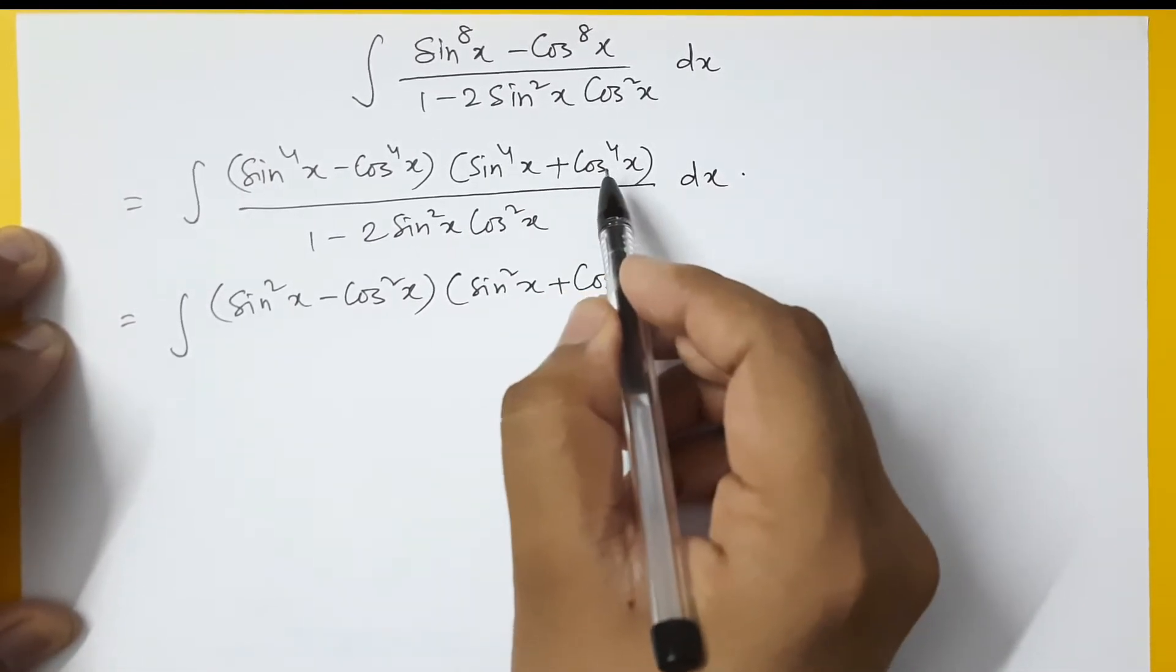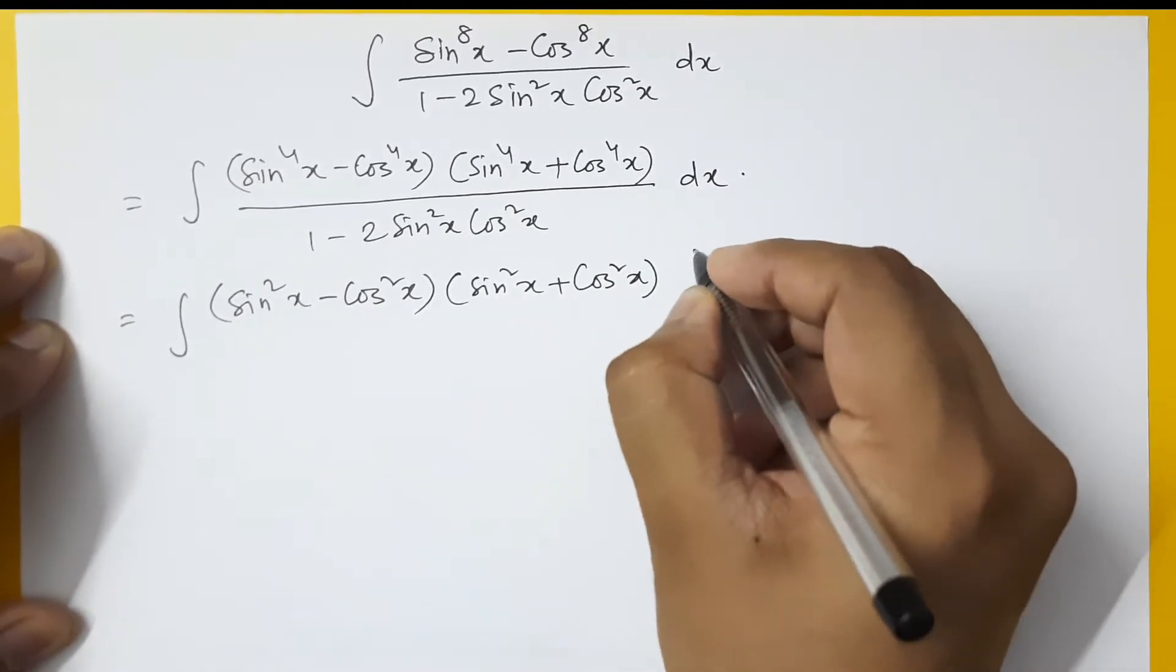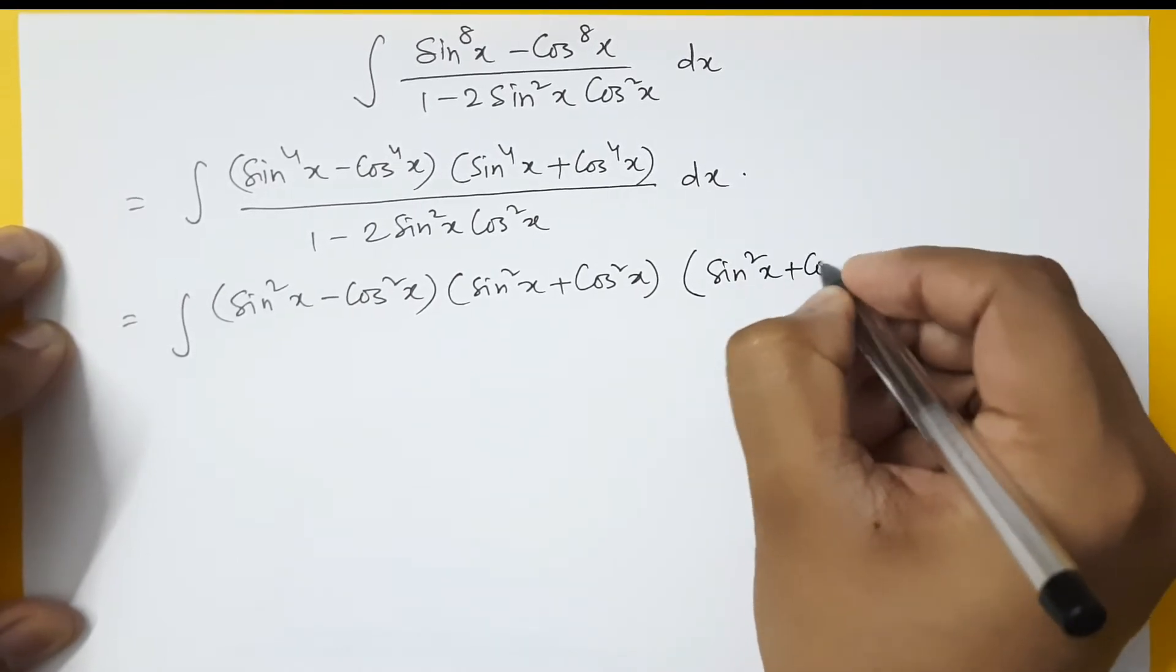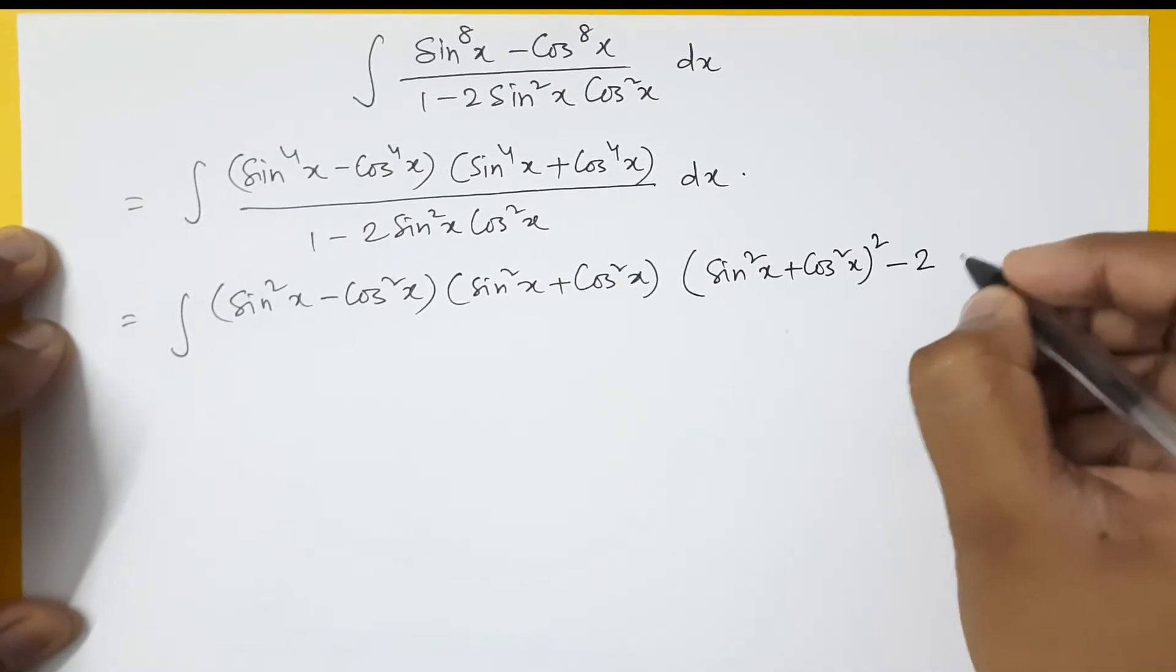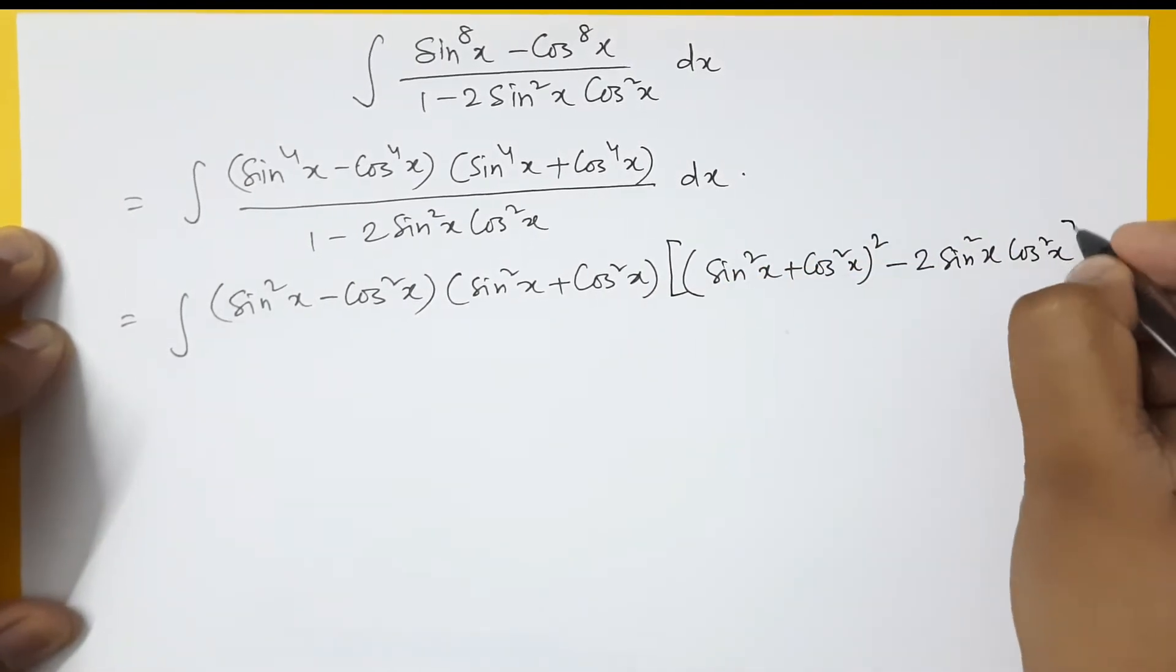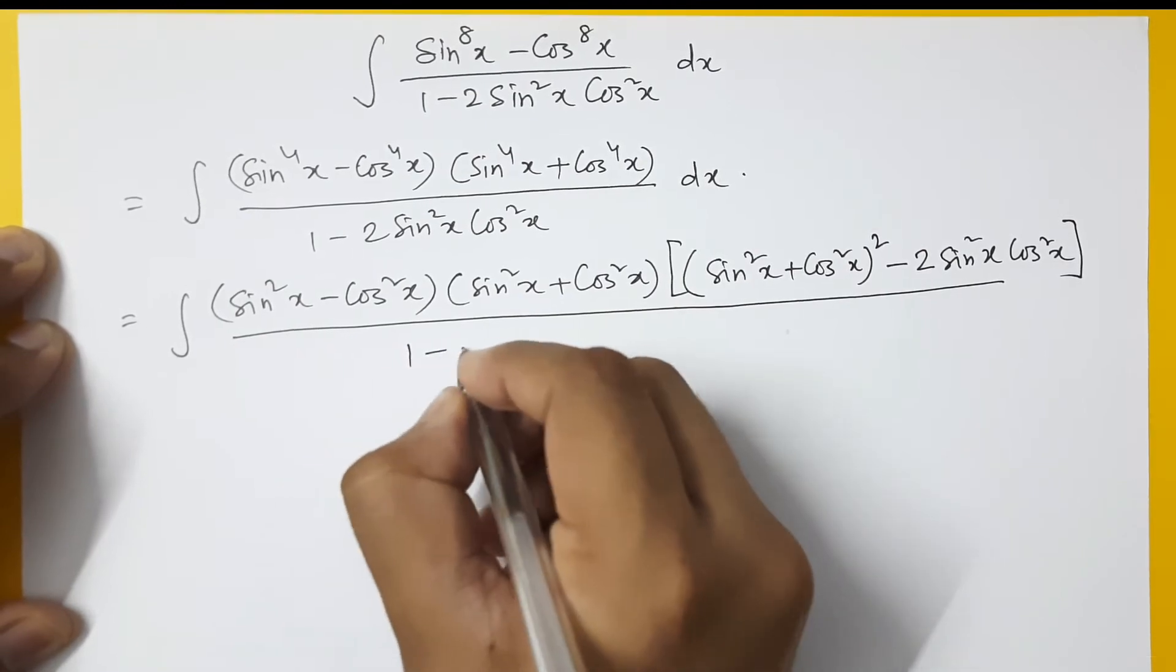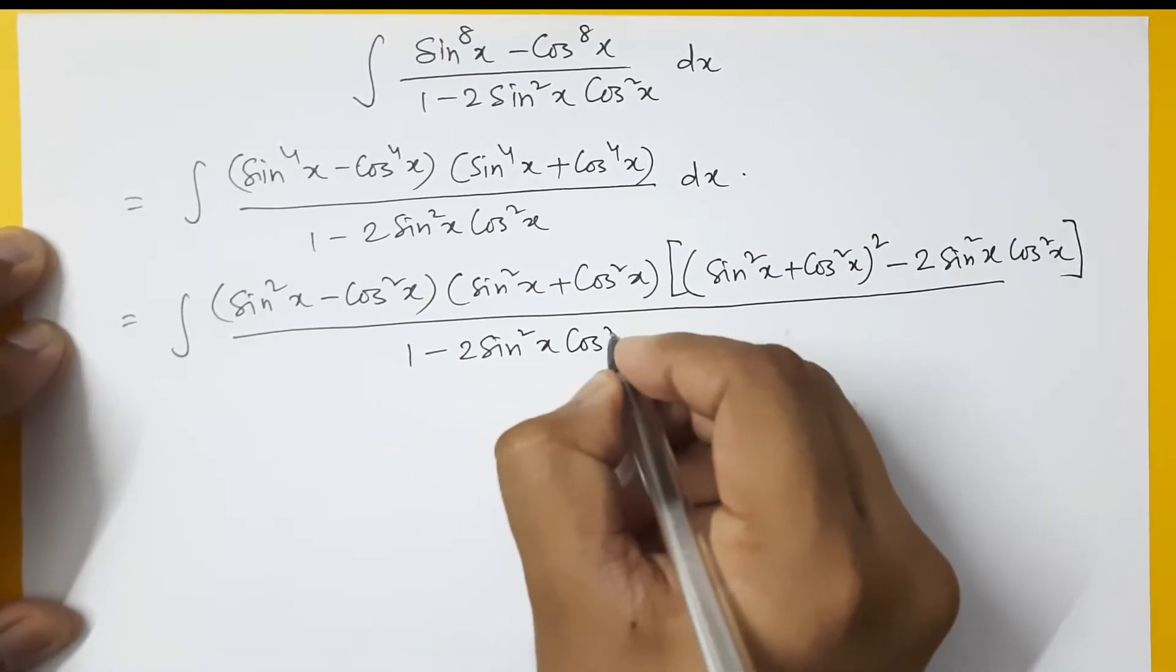And in this term, you apply the formula of a² + b². So this will be (sin²x + cos²x)² - 2sin²x cos²x. 2sin²x into cos²x, and dx is there.